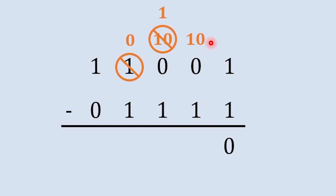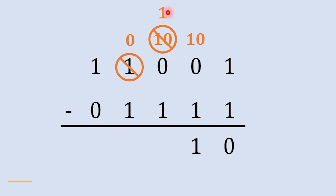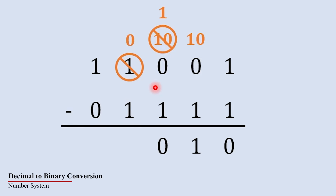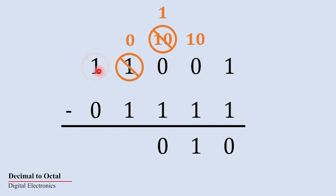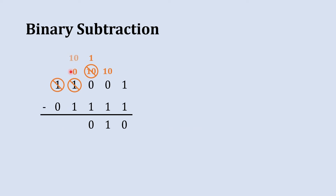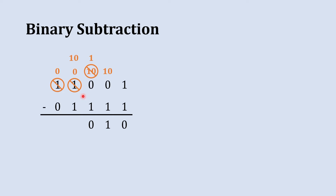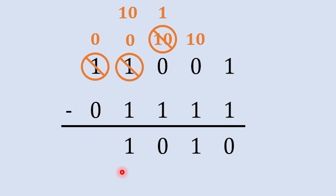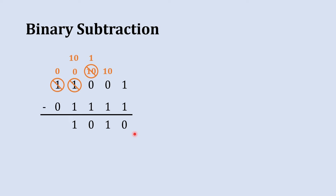Subtracting one from one-zero gives one. In the next column, one minus one gives zero. Then we try to subtract one from zero — again not possible — so we borrow from the next column, which is one. It becomes one-zero and that position becomes zero. One from one-zero gives one. The final answer is 1-0-1-0.